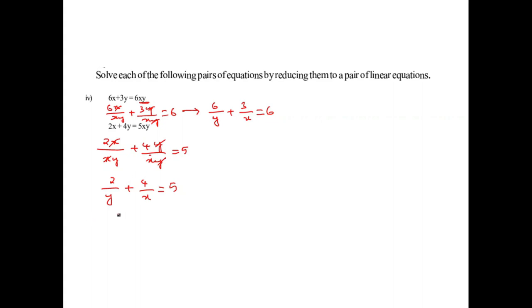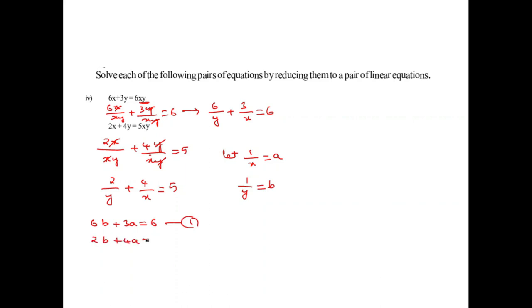Assuming 1 by x equals A and 1 by y equals B, the first equation becomes 6B plus 3A equals 6 (equation 1), and the second becomes 2B plus 4A equals 5 (equation 2).